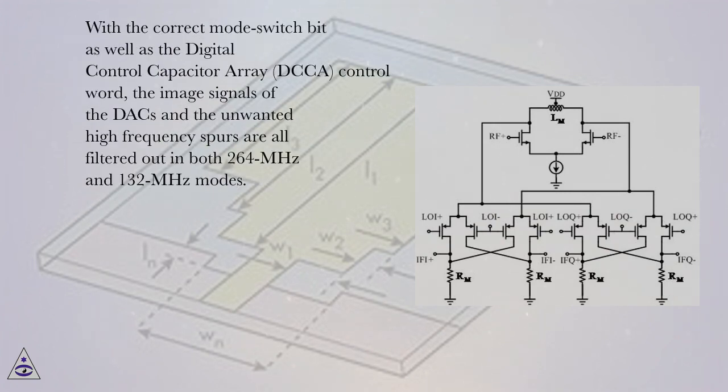With the correct mode switch bit as well as the digital control capacitor array, DCCA, control word, the image signals of the DACs and the unwanted high frequency spurs are all filtered out in both 264 MHz and 132 MHz modes.